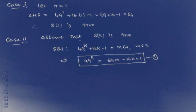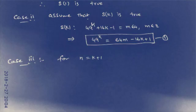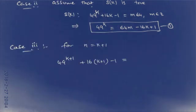Case 3: Let n = k + 1. In the statement, replace n with k + 1. We get 49^(k+1) + 16(k+1) - 1.